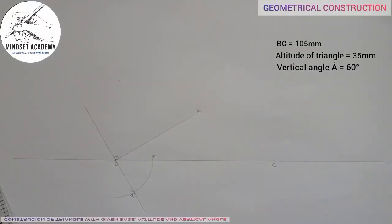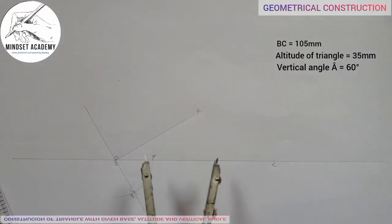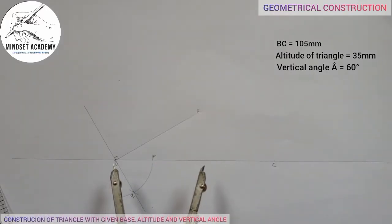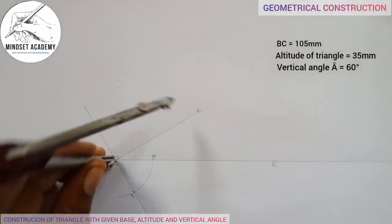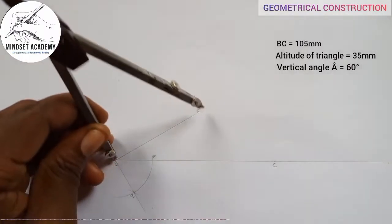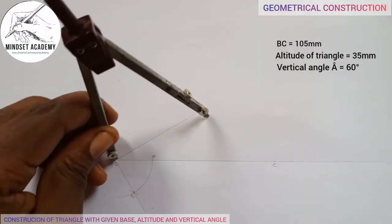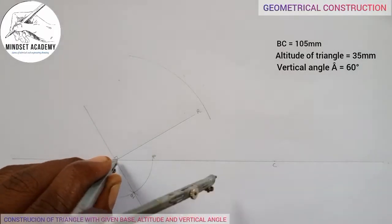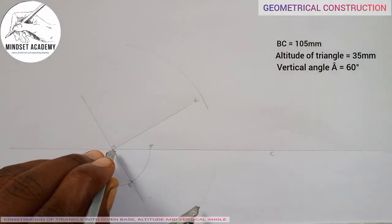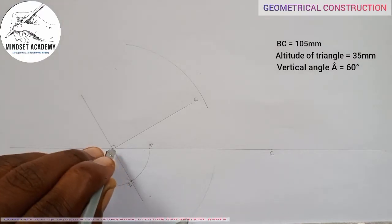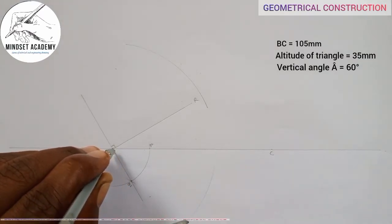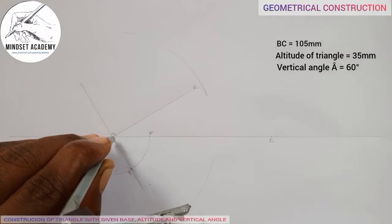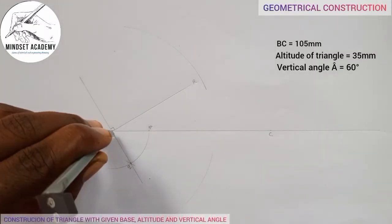The next thing I am going to do is to bisect BC. At any given radius, you place your compass at point B and strike an arc. I'll strike this arc this way, strike up and strike down. Similarly, I'll come to C and do the same thing with the same radius. Strike up and strike down this way.